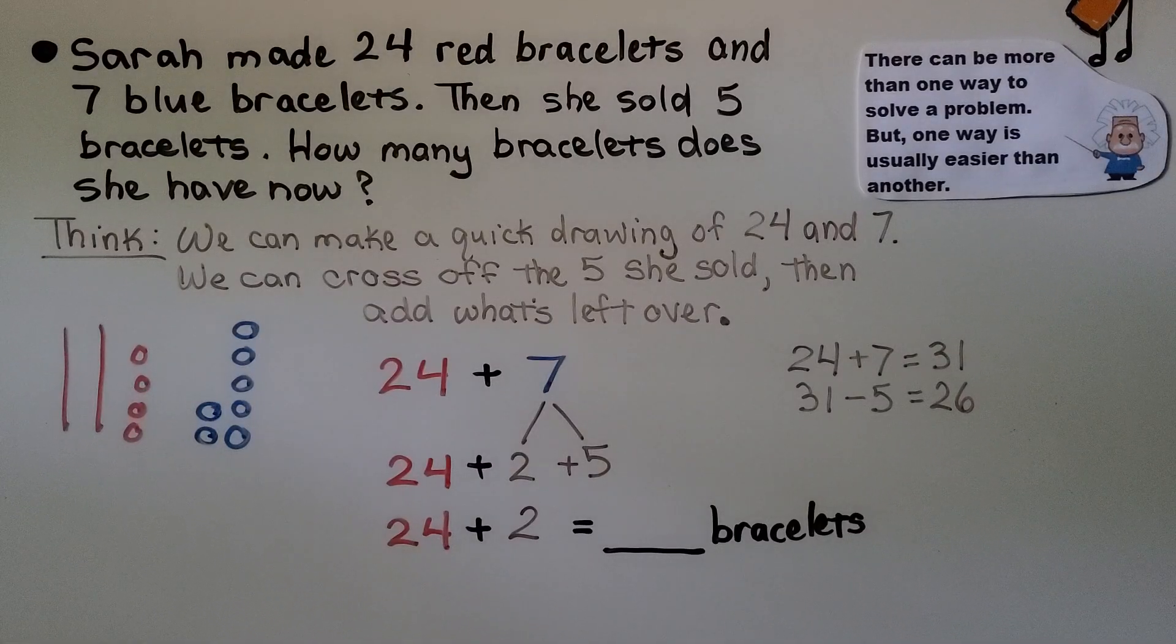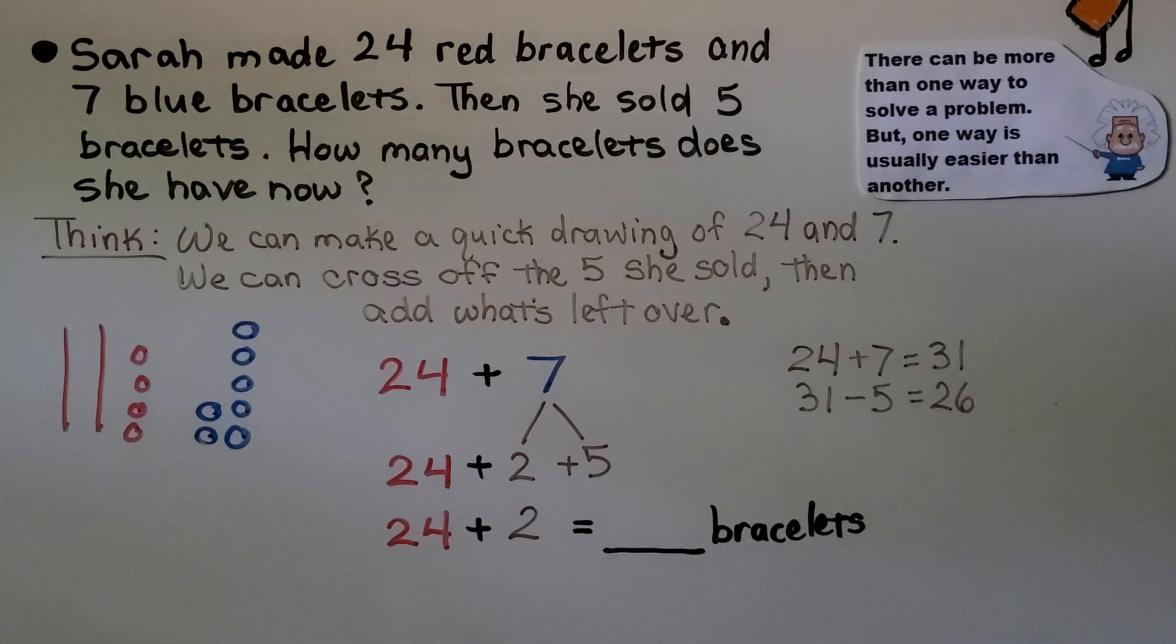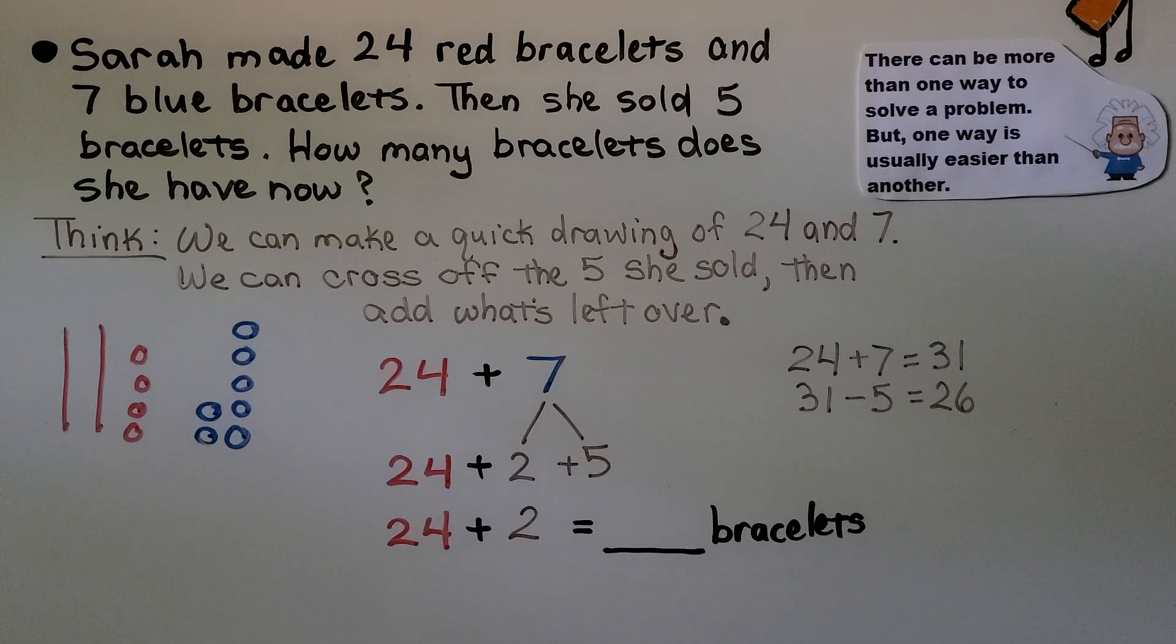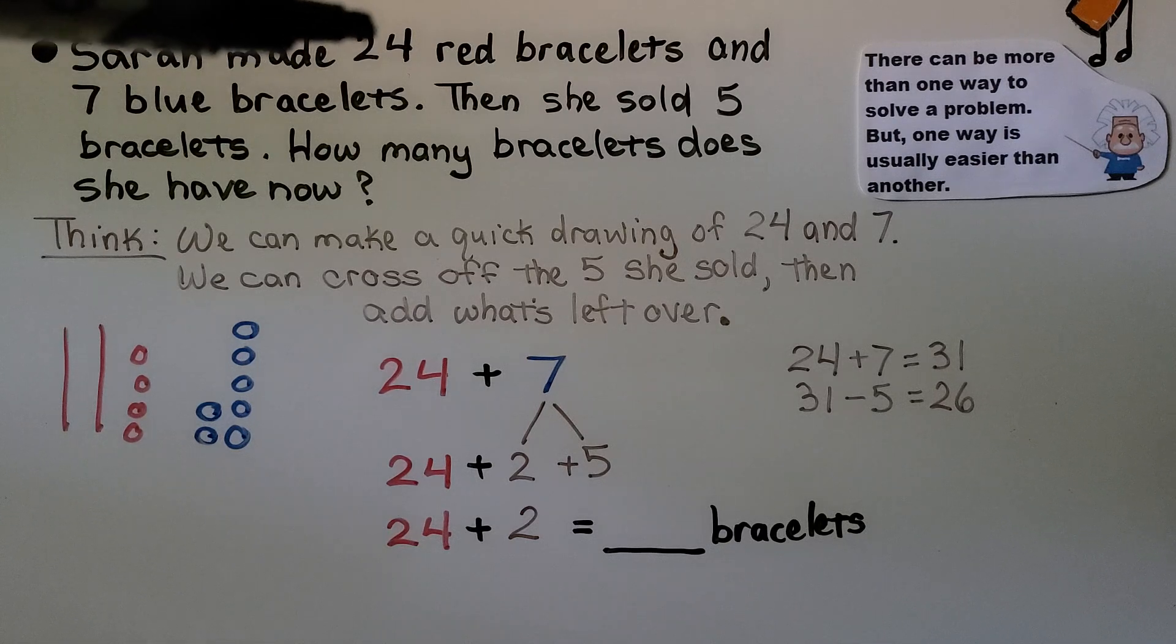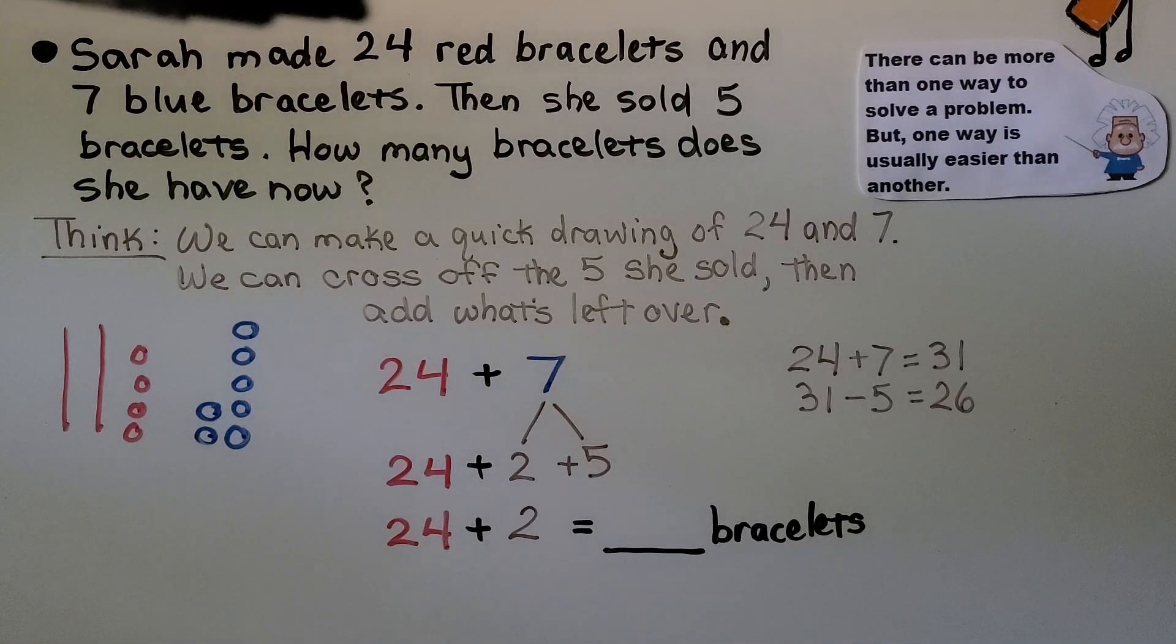We're going to solve a word problem and we're going to learn that there can be more than one way to solve a problem, but one way is usually easier than another. It might be faster. It says Sarah made 24 red bracelets and 7 blue bracelets. Then she sold 5 bracelets. How many bracelets does she have now?